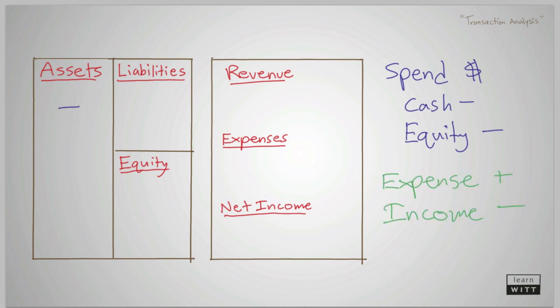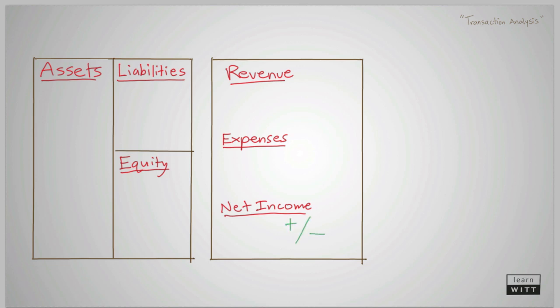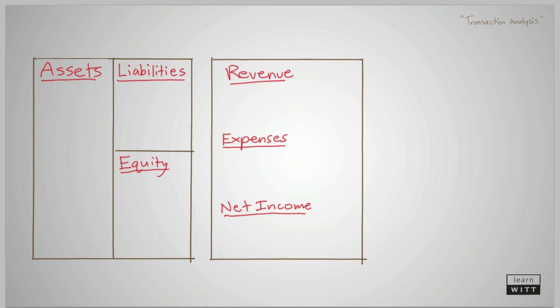There is a connection between transactions that affect the income statement and the equity section of the balance sheet. When income increases or decreases, there is a corresponding increase or decrease in equity on the balance sheet. However, the equity section changes for other reasons too. The equity section is comprised of contributions, income, and distributions.